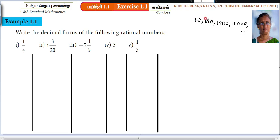Denominator should have 10, 100, 1000, 10,000. Just you take the first one, 1 by 4.